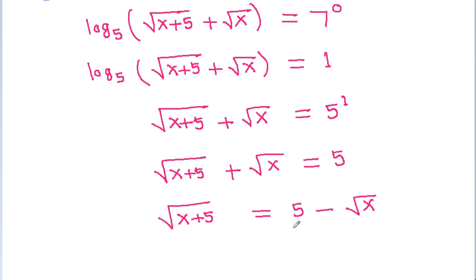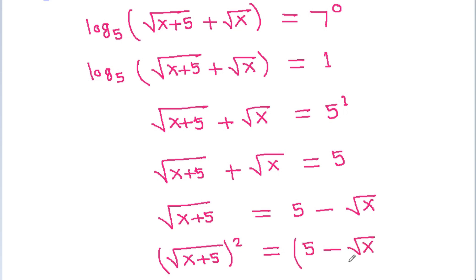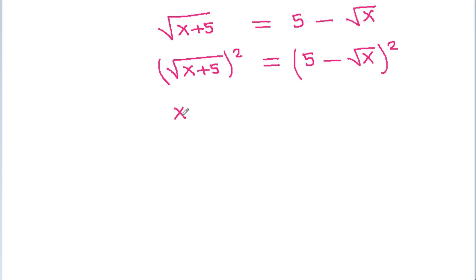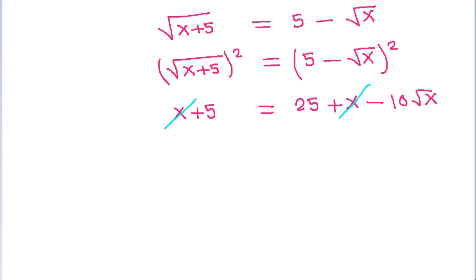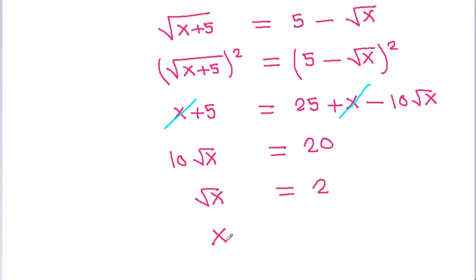If we square both sides, then (square root of (x plus 5)) squared gives x plus 5, which equals 25 plus x minus 10 times square root of x. The x terms cancel, giving 10 times square root of x equals 20, so square root of x equals 2, and x equals 4.